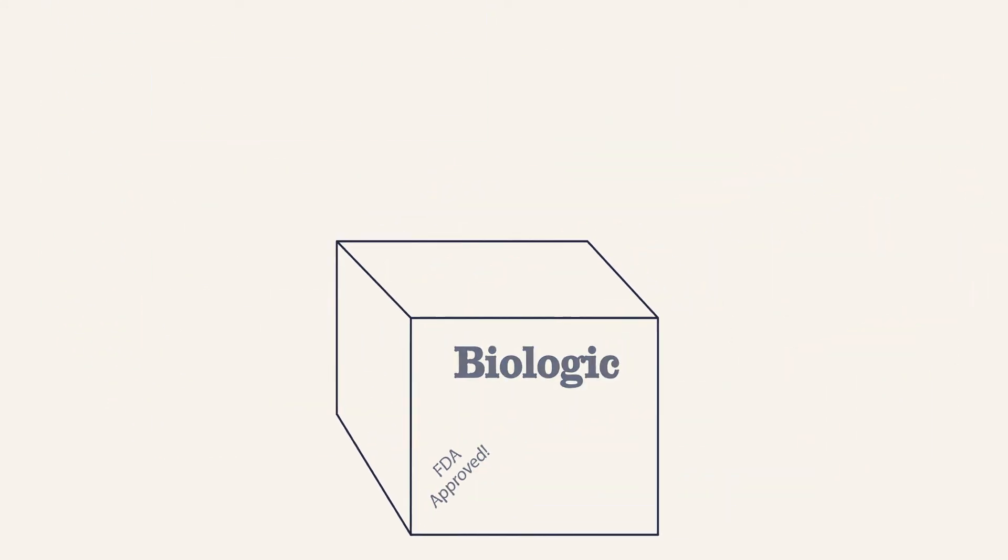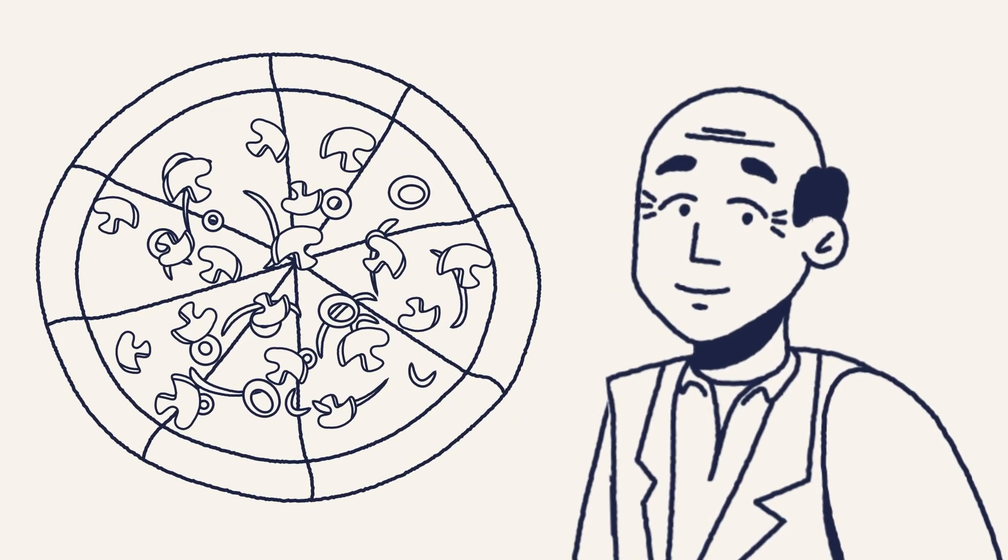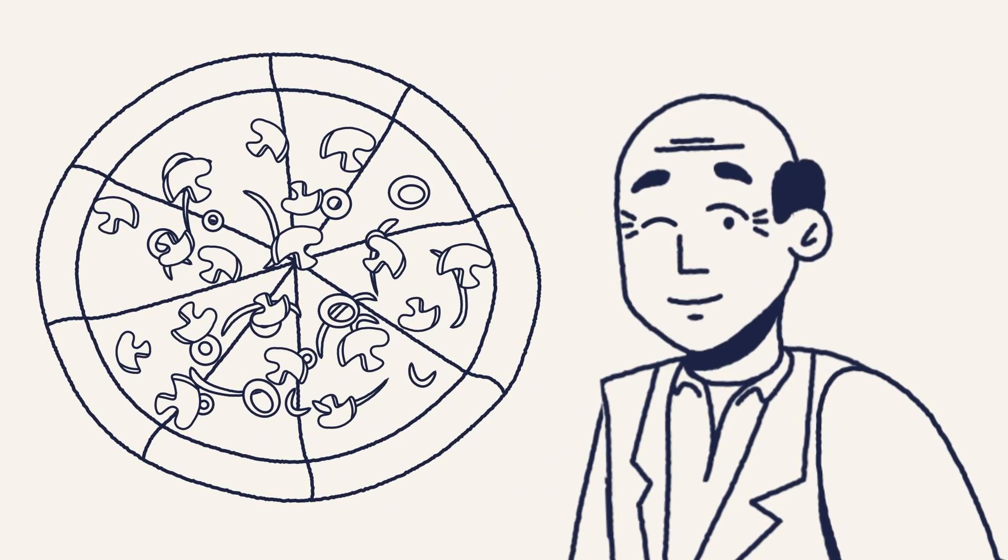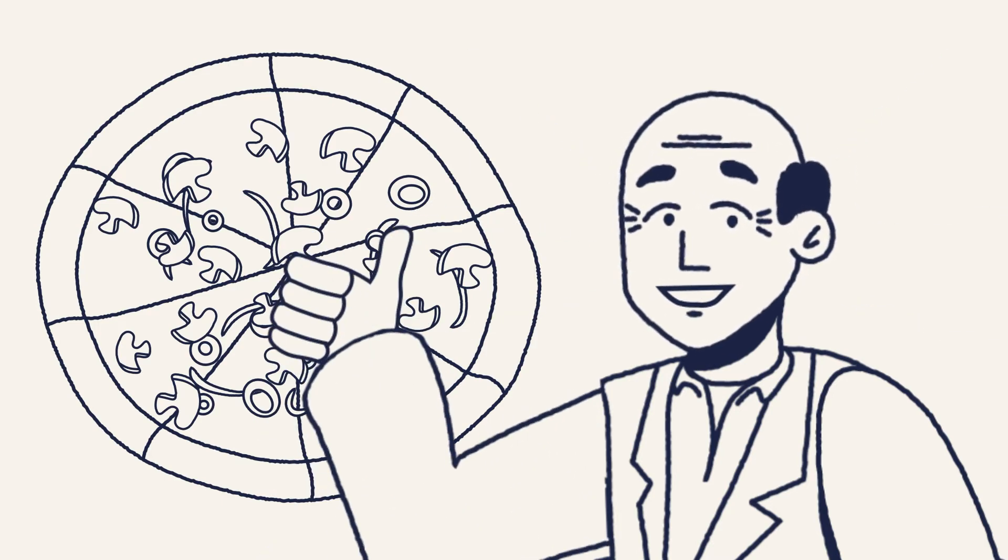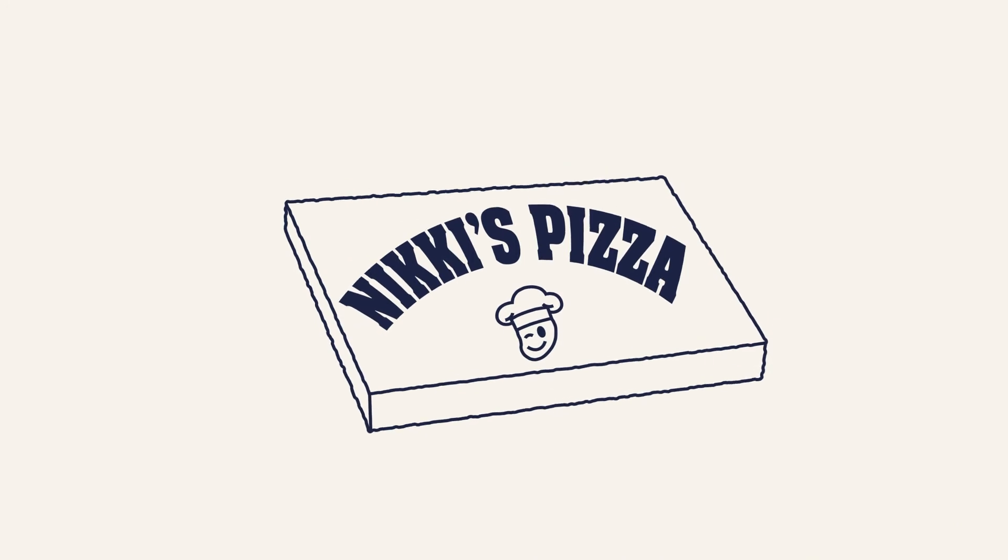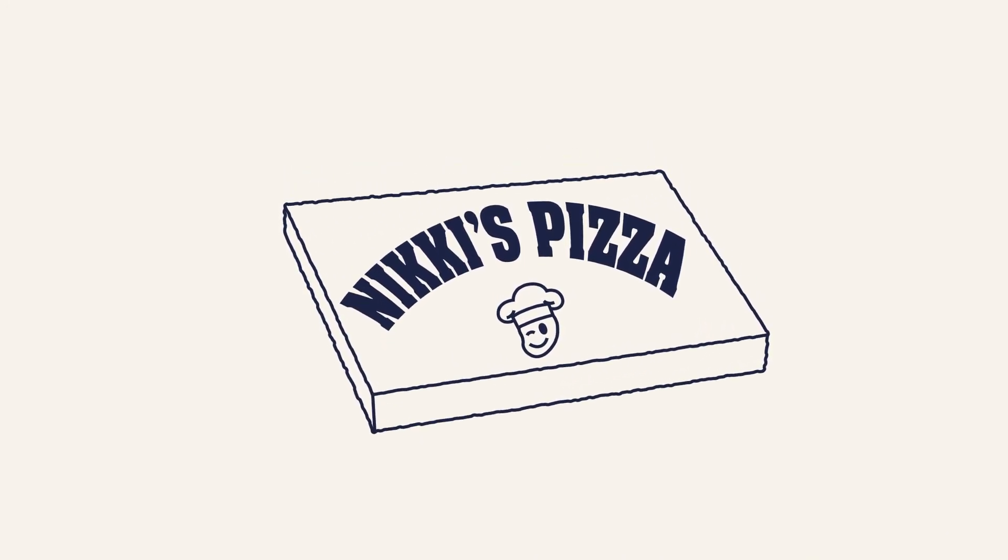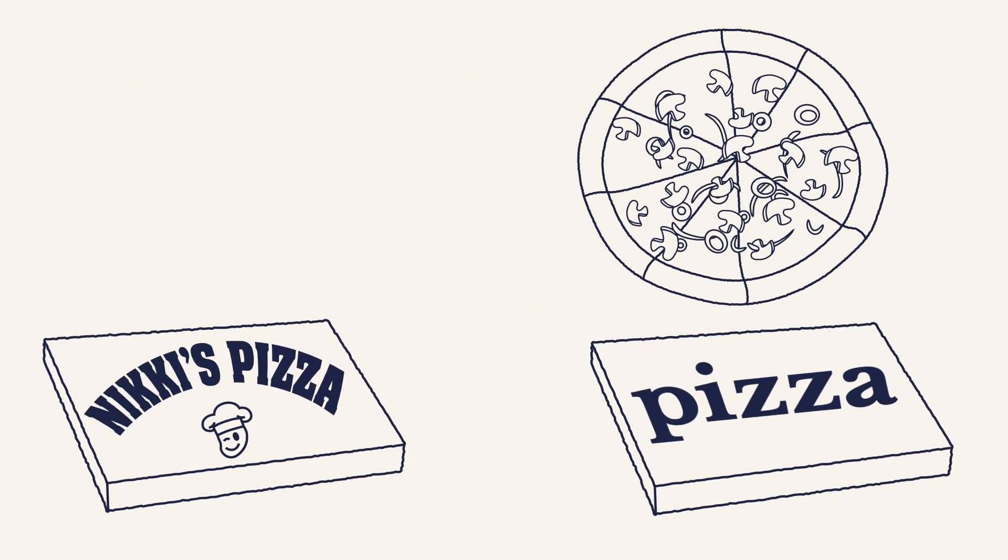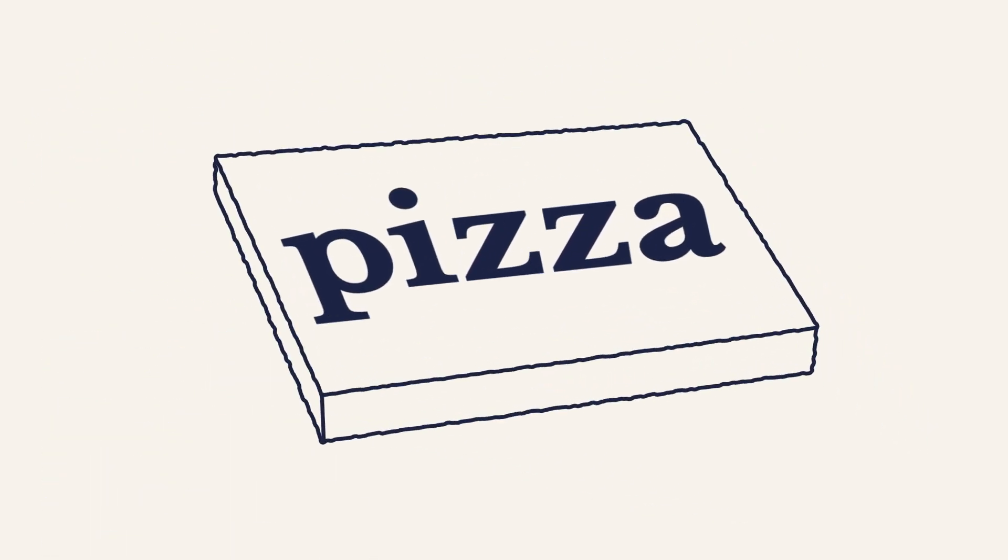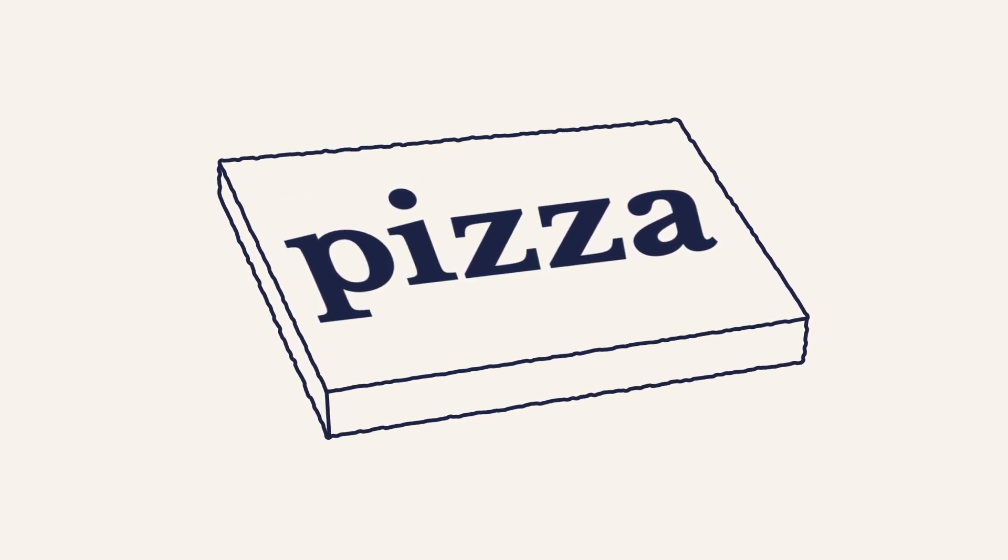In this case, you ordered the same veggie pizza one last time. Maybe this time your favorite restaurant will finally get your order right. Your pizza is made exactly as ordered. Finally! But before they deliver it to you, your pizza is removed from the box that you're used to and put into a different box. Same pizza, same ingredients, same recipe. The only difference is the packaging.